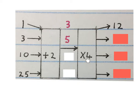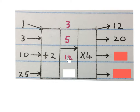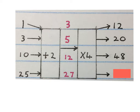Take the 5 and times it by 4 to get its final answer, which is 20. Take the 10, plus 2 to it, we get 12, we times that by 4 and that gives you 48. Last one: 25 plus 2 to it gives you 27, times that by 4, gives you 108.